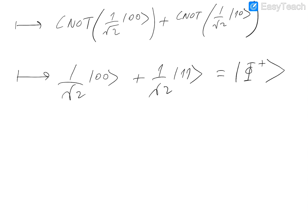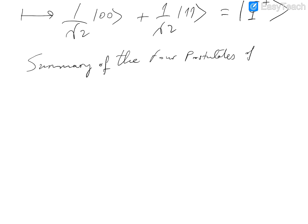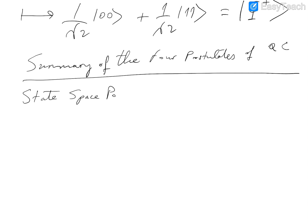We are almost finished with the second chapter on basic quantum theory. Let me summarize the postulates of quantum computing. The first postulate is the state space postulate: it asserts that the state of an n-dimensional quantum system is described by a unit length vector in an n-dimensional Hilbert space. So the state of a qubit is a unit length vector in a two-dimensional complex inner product space.